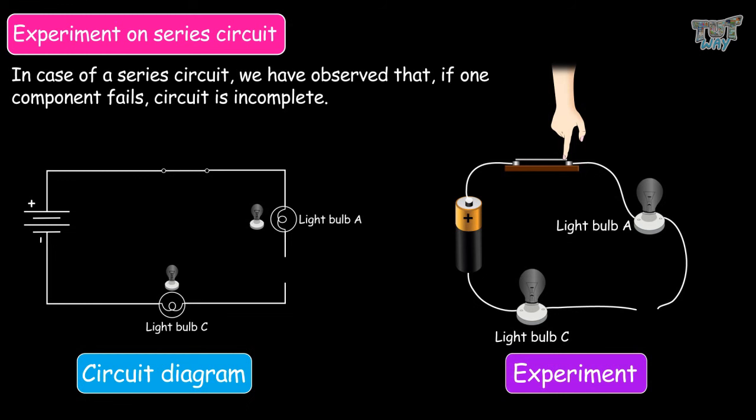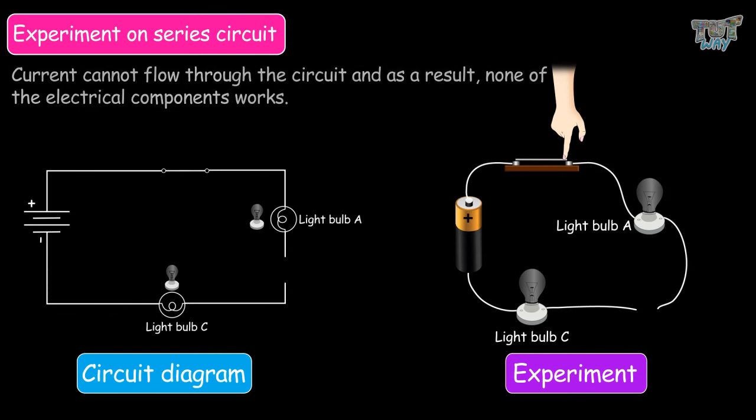Therefore, in the case of a series circuit, we have observed that if one component fails, the circuit is incomplete. The current cannot flow through the circuit, and as a result, none of the electrical components will work. So friends, we have learned a lot about series and parallel circuits, the advantages and disadvantages of both. I hope that you have learned it all by heart.